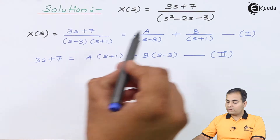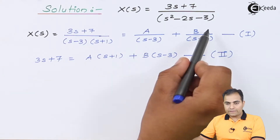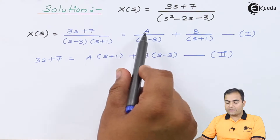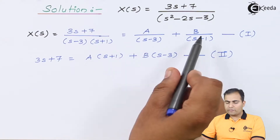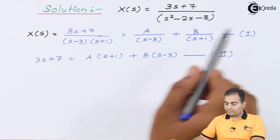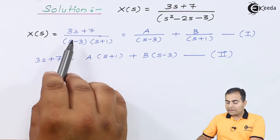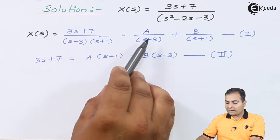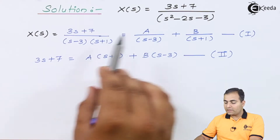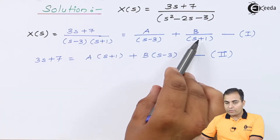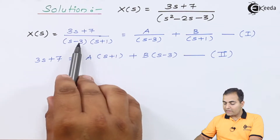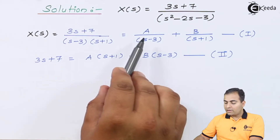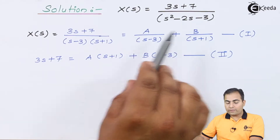Since we have two poles, we take two variables A and B. X(s) = A/(s - 3) + B/(s + 1). It is not necessary to place (s - 3) in the denominator of A — you can swap them. This is Equation 1. Multiplying through by the denominator, we get: 3s + 7 = A(s + 1) + B(s - 3). This is Equation 2.